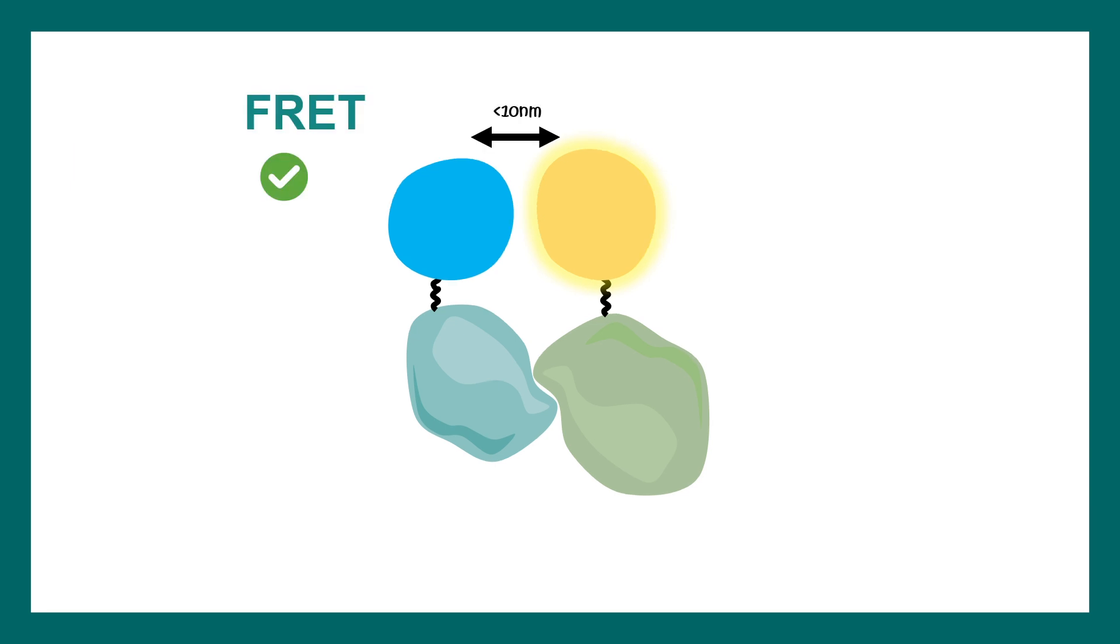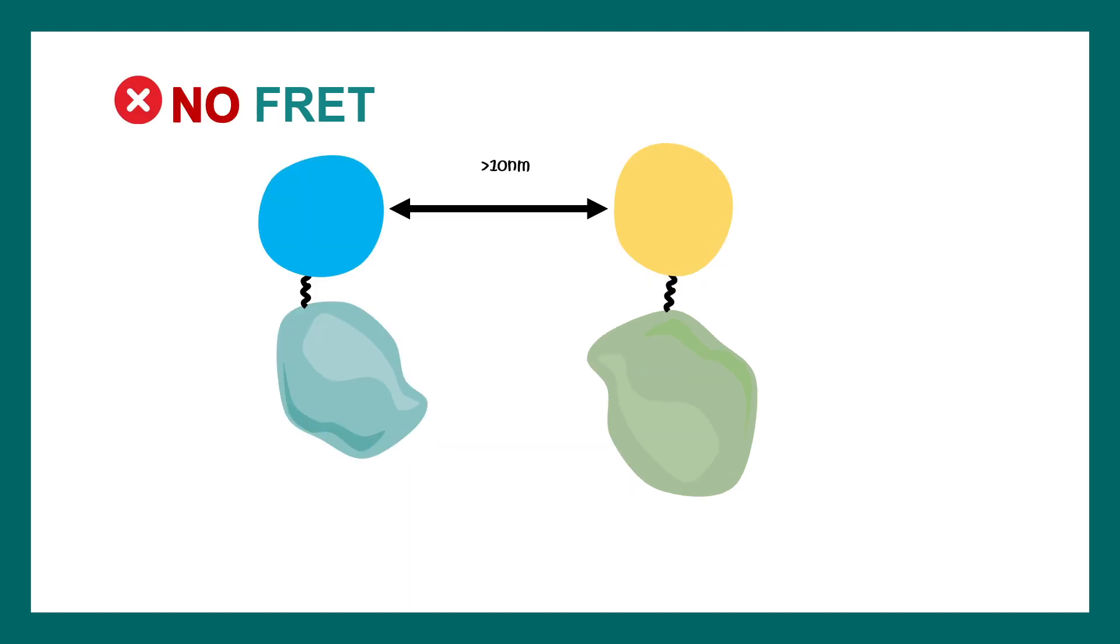FRET is really sensitive towards distance between the donor and acceptor. If the distance is less than 10 nanometers, FRET is possible. In contrast, if the distance is more than 10 nanometers, there is no FRET. So overall, FRET is very very sensitive towards distance. Using this technique, one can understand protein-protein interaction. Molecular interactions can be studied using FRET, because two molecules will interact when they are close enough. Proximity analysis can be done using FRET.